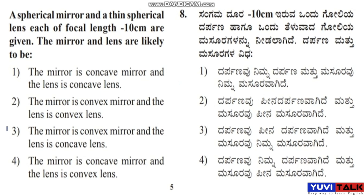The right answer is option 3: the mirror is a convex mirror and the lens is a concave lens. So option 3 is the correct answer. Let's move on to the next question.